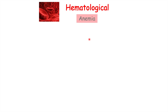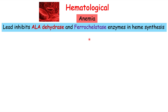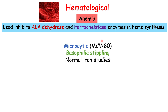The hematological effect that occurs from lead poisoning is anemia. Because lead inhibits two enzymes in the heme synthesis pathway — ALA dehydratase and ferrochelatase — this leads to anemia, or a low hemoglobin and low red blood cell level. It's going to lead to a microcytic anemia, meaning the MCV, or mean corpuscular volume, is less than 80, so the average size of a red blood cell is small.